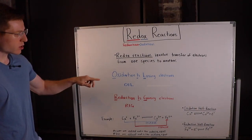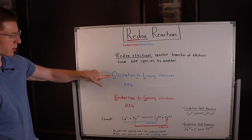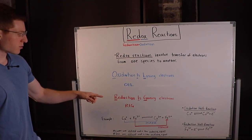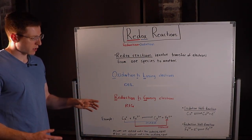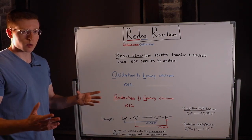When you lose electrons, that's called oxidation. You can remember this with OIL: oxidation is losing electrons. Reduction is when you gain electrons. You can remember that with RIG. You can pair these up and think OIL RIG.